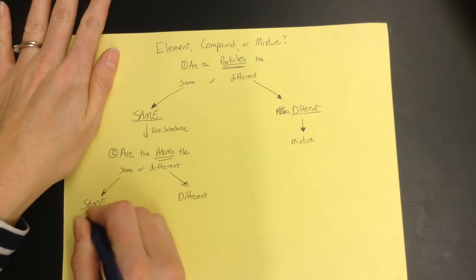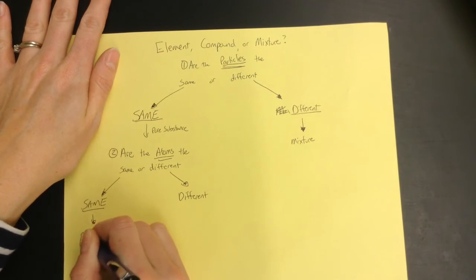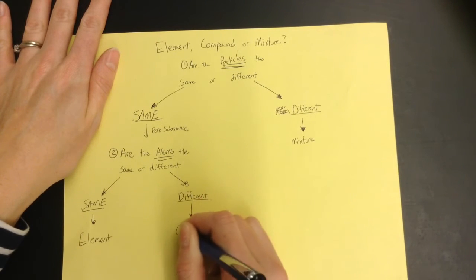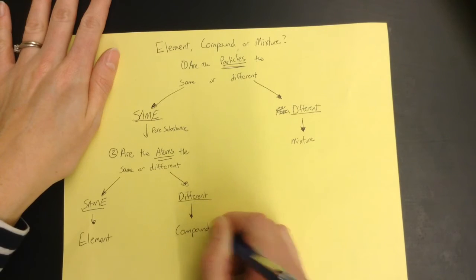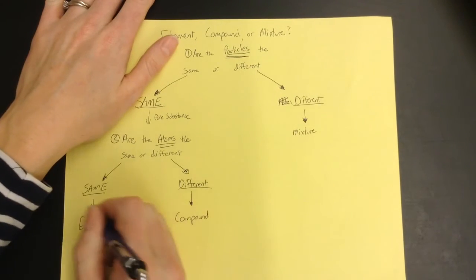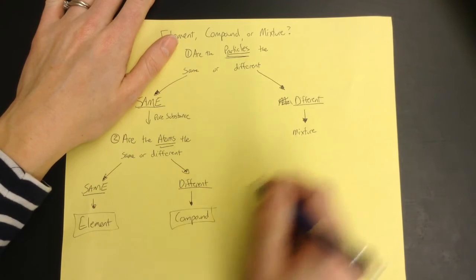And if it is the same, then it is an element. And if the atoms are different, then it is a compound. And so that's how we know if something is an element, a compound, or a mixture by looking at the particle diagrams.